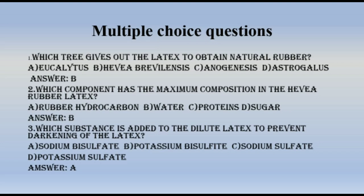MCQ 3: Which substance is added to dilute latex to prevent darkening of the latex? A. Sodium Bisulfate, B. Potassium Bisulfate, C. Sodium Sulphate, D. Potassium Sulphate. The answer is A — Sodium Bisulfate.